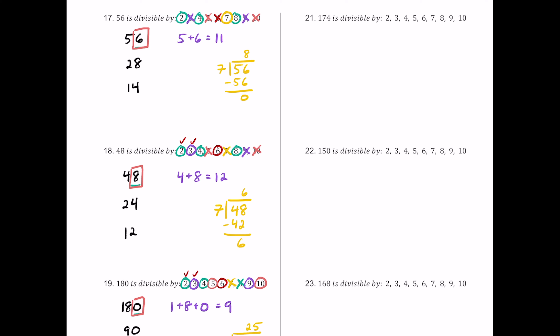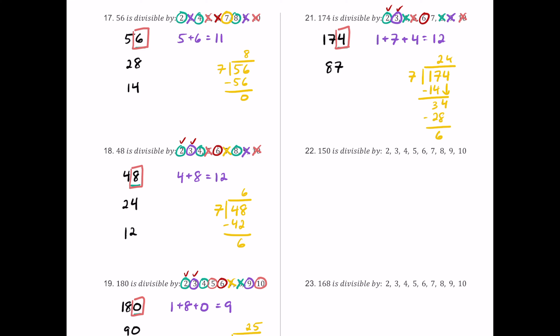For number 21, we have 174. The last digit is 4, so it's even and 2 works. Half of 174 is 87, which is odd, so 4 and 8 fail. The digit sum 1 plus 7 plus 4 is 12, a multiple of 3 but not 9. Since 2 and 3 both work, 6 also works. The last digit is 4, not 5 or 0, so 5 and 10 fail. Dividing 174 by 7 leaves a remainder of 6, so 7 fails.